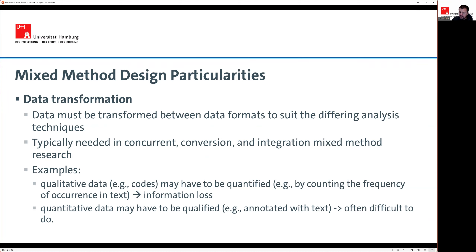Converting in the other direction — from quantitative data to qualitative — is also difficult. For instance, annotating a rating of three out of ten as 'relatively boring' is problematic because you are trying to enrich data with more information than you actually have. These challenges arise during data transformation.